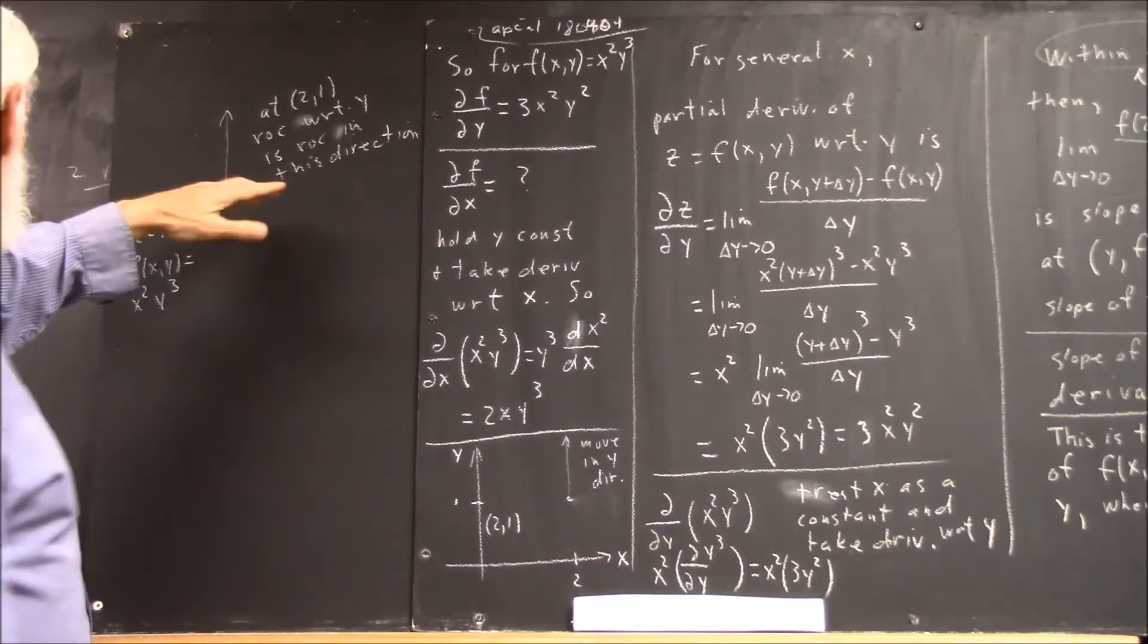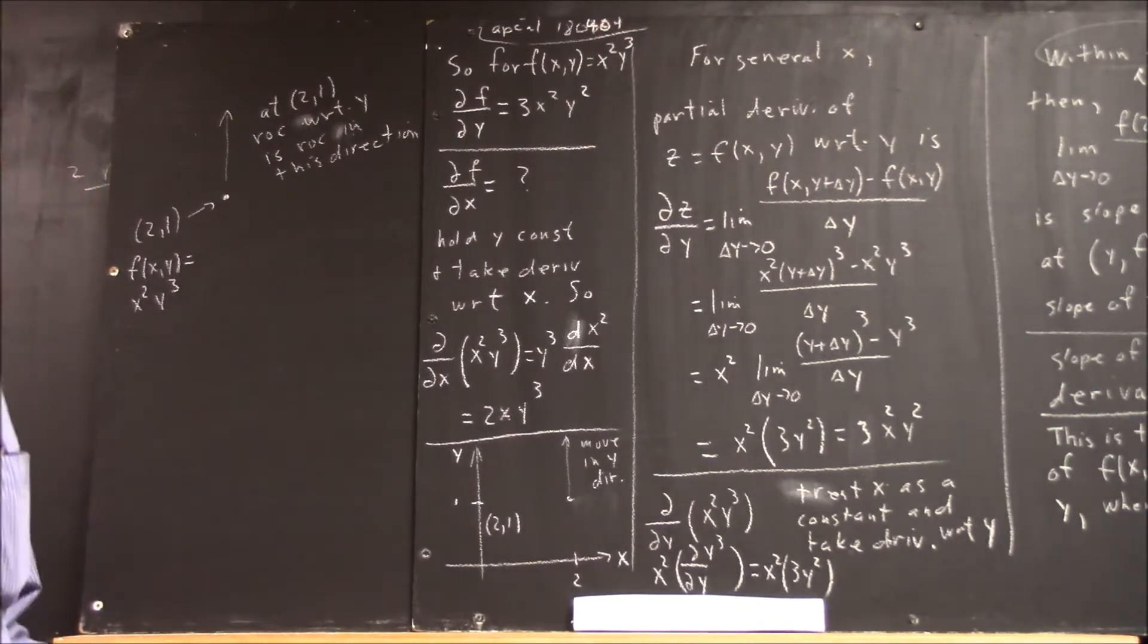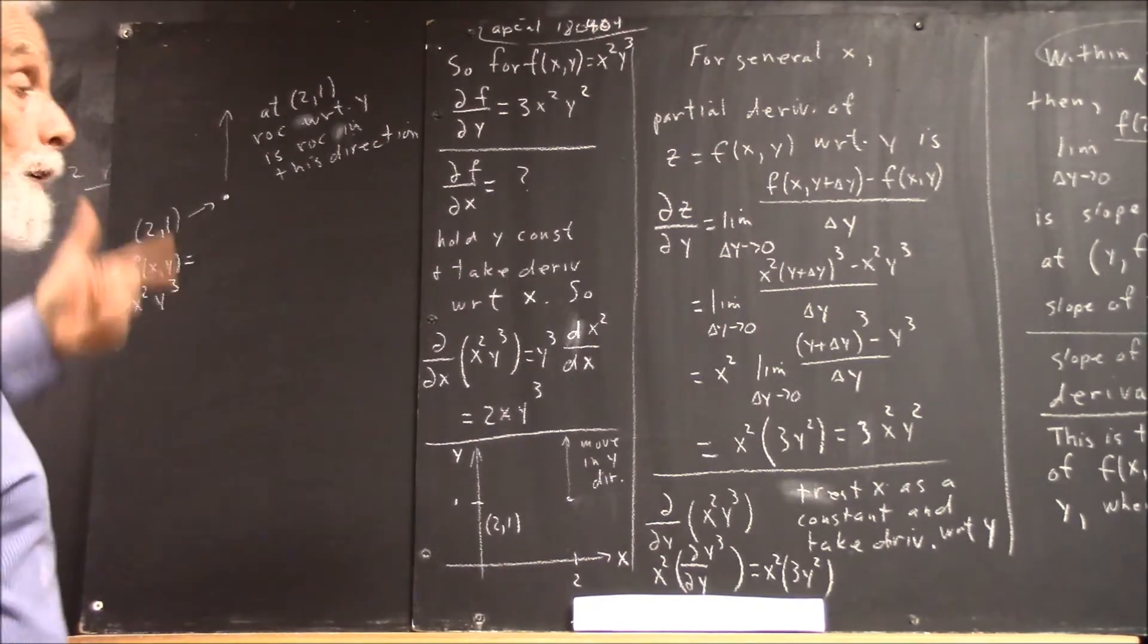So that the origin might be 30 feet that way. So what is the rate of change?